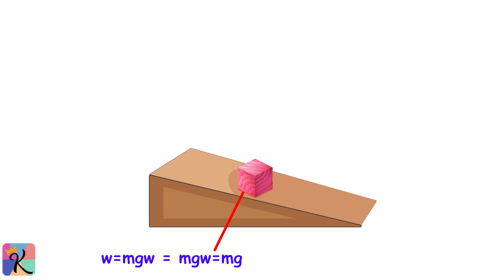Let's start with the basics. Imagine you have a block sitting on a ramp inclined at an angle theta. The force that always acts on any object is its weight, which we represent as W = Mg, where M is the mass of the object and G is the acceleration due to gravity, approximately 9.8 meters per second squared.